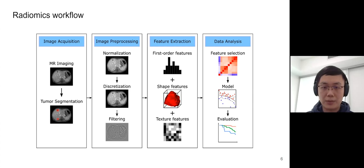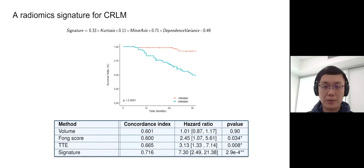Once we extracted the features, we can use machine learning methods to perform feature selection and build models to predict patient outcome. In this work, we extracted 100 features and used LASSO logistic regression for feature selection and predictive modeling. We derived a very simple three-feature signature using LASSO logistic regression, and by dichotomizing patients into two groups with predicted signature values higher or lower than the median, our model had very good predictive ability.